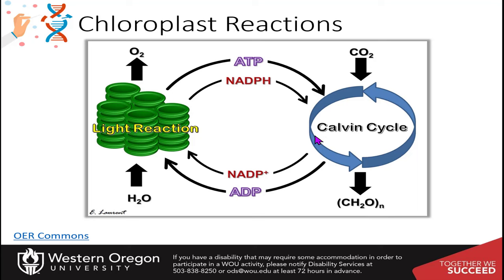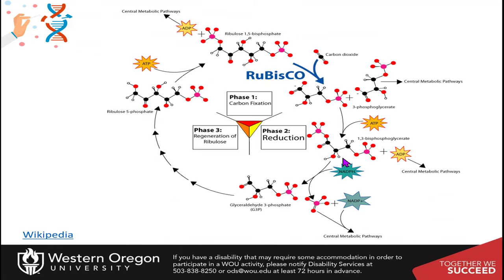The enzymes involved in this reaction are known as the Calvin cycle, which consists of three major phases. Phase one is the carbon fixation phase — carbon dioxide is fixed or bonded to an organic molecule called ribulose 1,5-bisphosphate, making it one carbon larger, converting it from a 5-carbon compound into a 6-carbon compound. This then spontaneously breaks apart into two 3-carbon units.